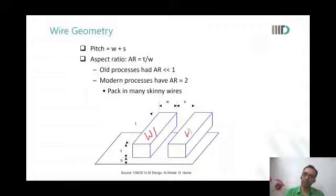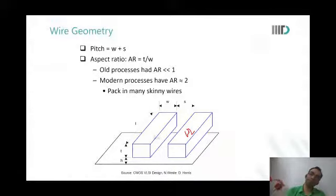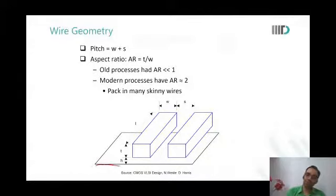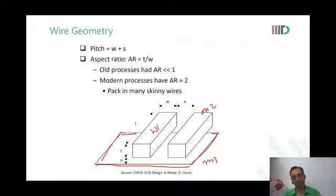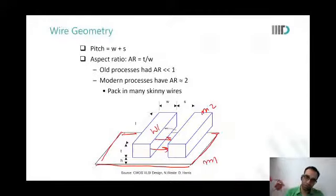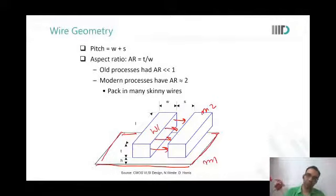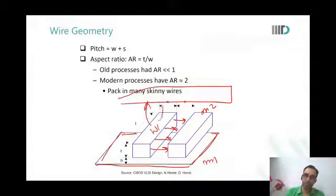These wires are like cuboids. Wire one and wire two run parallel to each other, creating a 3D space amongst themselves. There is a metal running beneath — let's say metal one — and metal two above. What kinds of capacitances will wire one see? It will see a capacitance between the other wire in the same layer due to lines of forces, and there could be another wire running above it, so there are lines of forces from above as well.